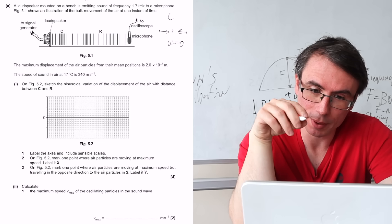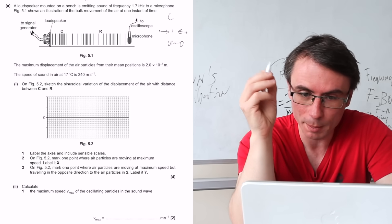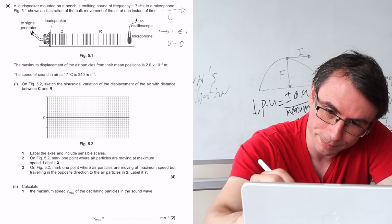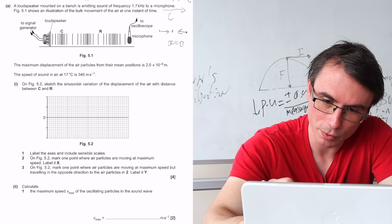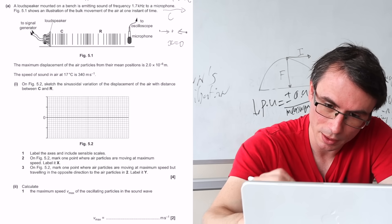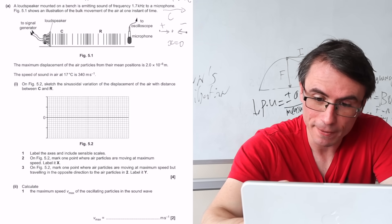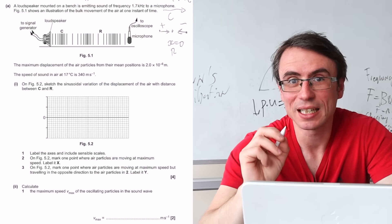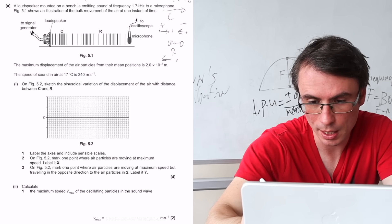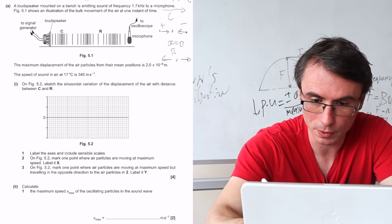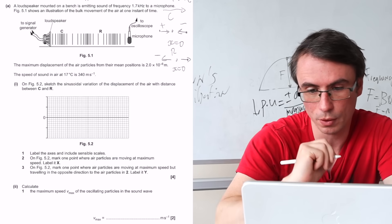There's no inherent positive or negative direction, so I'm going to choose one — going to the right is positive. The mark scheme accepts both. So if we do that, the left neighbour of a compression will have a positive displacement, and the right-hand neighbour will have a negative displacement. For a rarefaction, the left-hand neighbour is going away from that point, so x is negative because it's going to the left, and the right neighbour is positive.